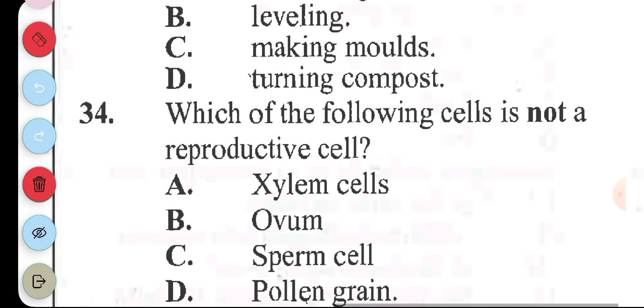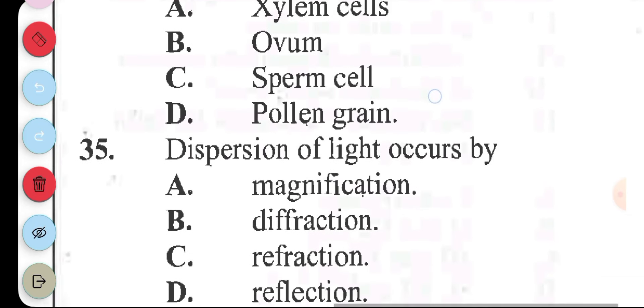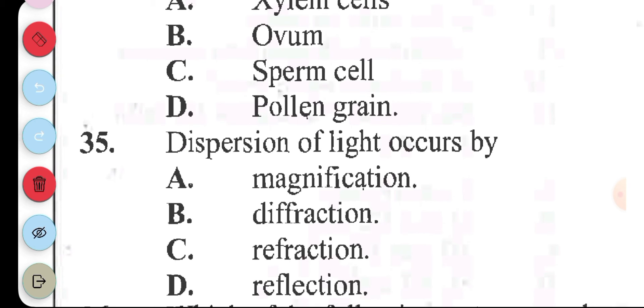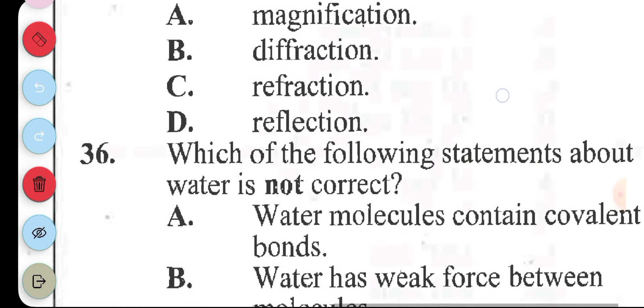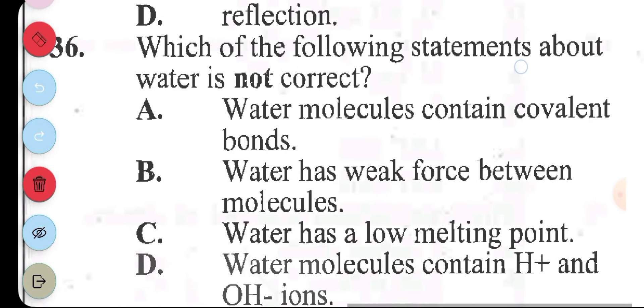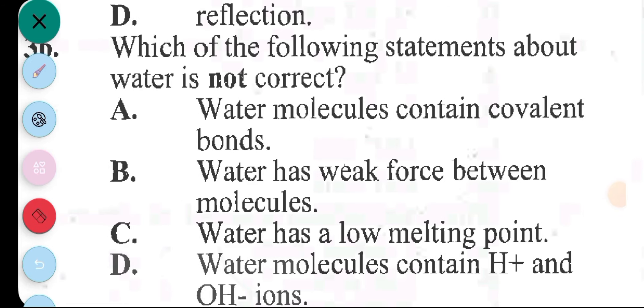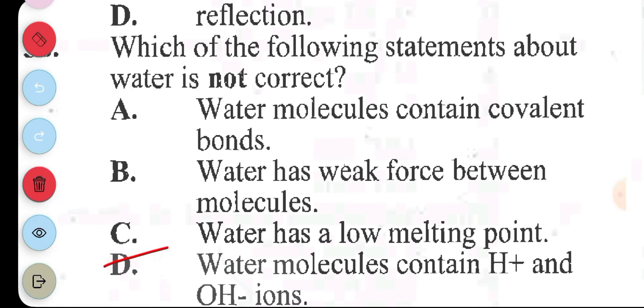Question 34: which of the following cells is not a reproductive cell? A, xylem cells. B, ovum. C, sperm cell. D, pollen grain. The answer to question 34 is A, xylem cells. Question 35: the dispersion of light occurs by A, magnification. B, diffraction. C, refraction. D, reflection. The answer to question 35 is refraction. Question 36: which of the following statements about water is not correct? A, water molecules contain covalent bonds. B, water has weak force between molecules. C, water has a low melting point. D, water molecules contain H plus and OH minus ions. The answer to question 36 is D, water molecule contains H plus and OH minus ions.